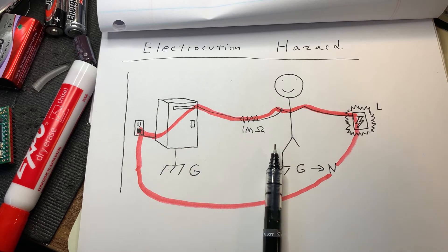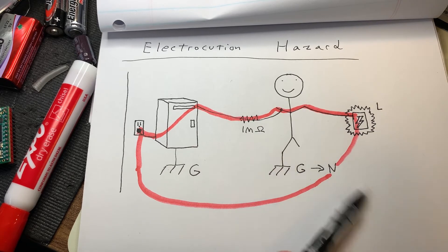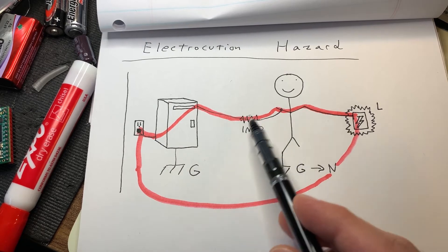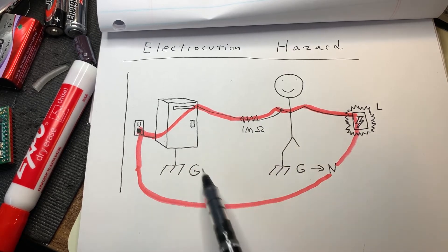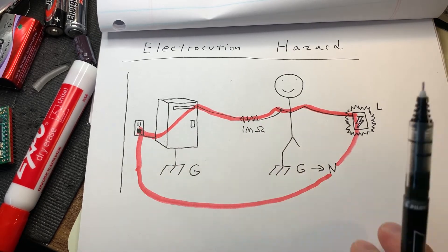So it's sort of a trade-off, because on one hand it's going to take a bit longer, in theory, to disperse the static electricity built up on your body. On the other hand, this one mega ohm resistor is potentially saving your life from this electrocution hazard.